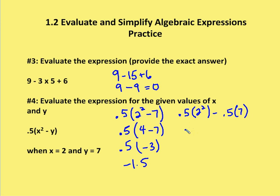Which is the same as 0.5 times 4 minus 0.5 times 7 or 3.5. And that's the same as 2 minus 3.5.